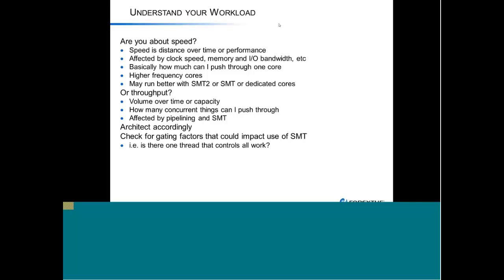If you think about the bulk of your workloads — OLTP with Oracle, DB2, or WebSphere — we're talking about throughput. This becomes more important with Power 7 than Power 6 because we now have simultaneous multi-threading 4, trying to push through four things at a time on a core instead of 2. There have been people who moved from Power 6 to Power 7 and didn't get the performance they were expecting, because they didn't understand their workload. They had gating factors like one thread controlling all the work, or couldn't take advantage of simultaneous multi-threading. It's important to understand whether you have those kind of gating factors.